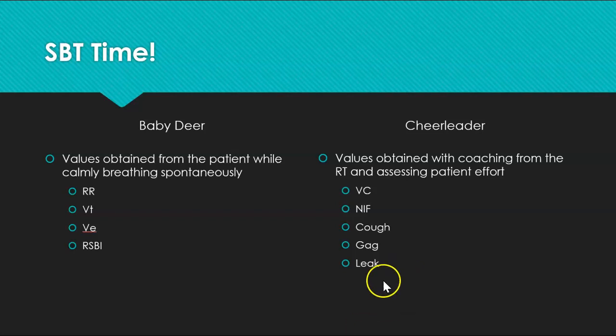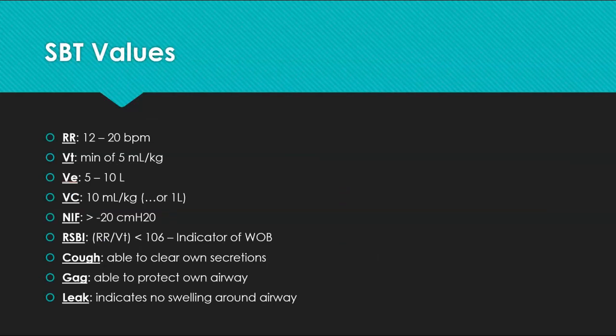A tip I didn't learn until I was a practicing RT: increase pressure support to 15 or 20 when checking for a leak so you can hear it loudly. After the SBT, put the patient back on about 8 over 5 pressure support to let them rest while you talk with the doctor and set up for extubation. Our SBT target values: respiratory rate 12-20 breaths per minute, tidal volume a minimum of 5 mL/kg, minute volume between 5 and 10 L.